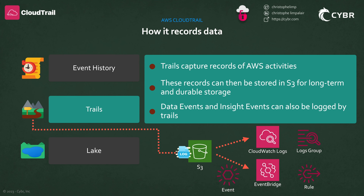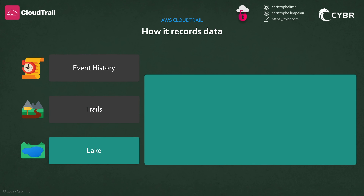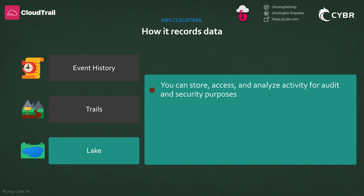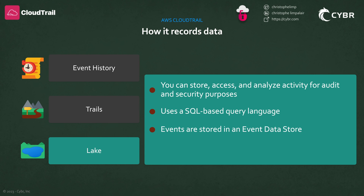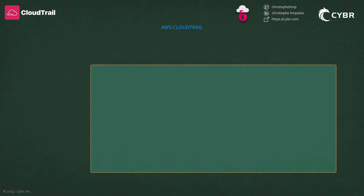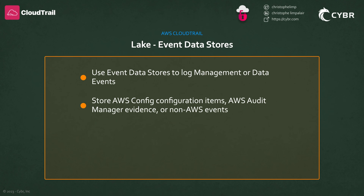You also get charged for data events that do get delivered to S3 from a trail. The third way of recording CloudTrail data is called CloudTrail Lake. Lake is a feature that lets you store, access, and analyze activity for audit and security purposes using a SQL-based query language. With Lake, events get stored into what's called an event data store, and you can even import existing CloudTrail logs from your S3 buckets into an event data store. You can use event data stores to log CloudTrail management and data events, and you can also store AWS Config configuration items, AWS Audit Manager evidence, or other non-AWS events from third-party integrations.